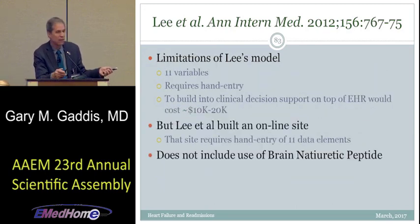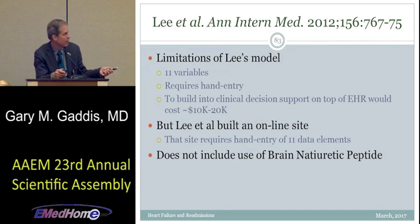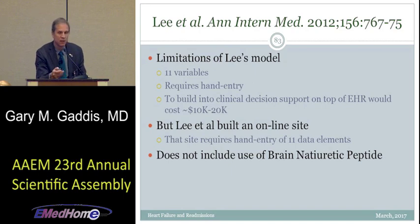Regarding the rule's limitations: there are 11 variables, one of which is a fudge factor to make the average score zero, and you have to hand-enter the 10 patient data points on NNT.com. Building your own clinical decision support at your site would cost about $10,000 to $20,000, so NNT.com has effectively done it for free. It's also advantageous that the rule doesn't require a BNP level.